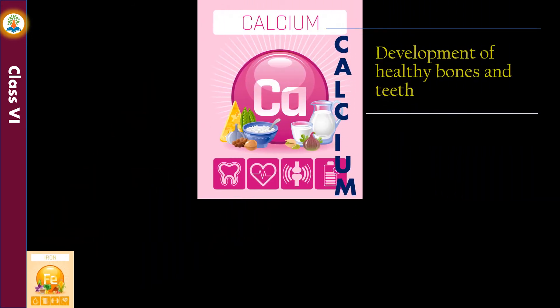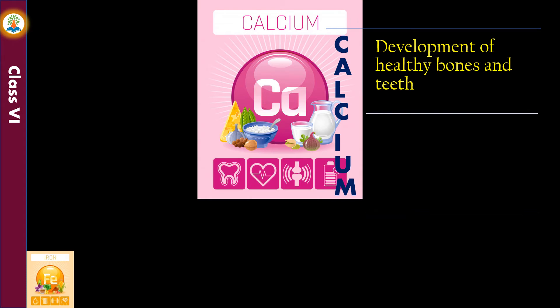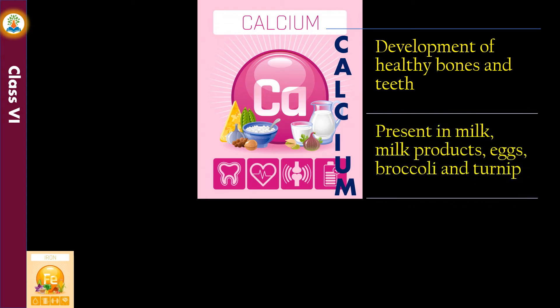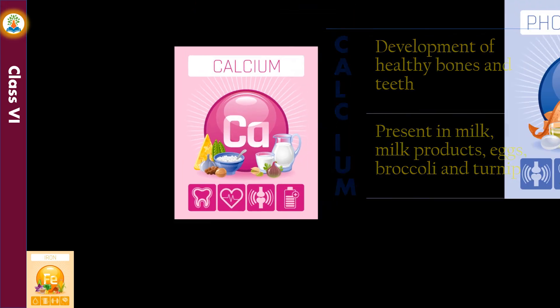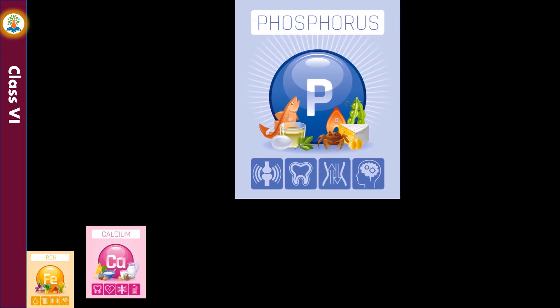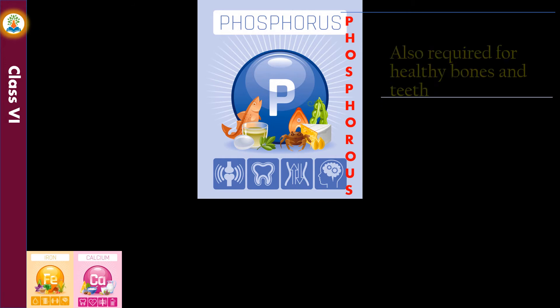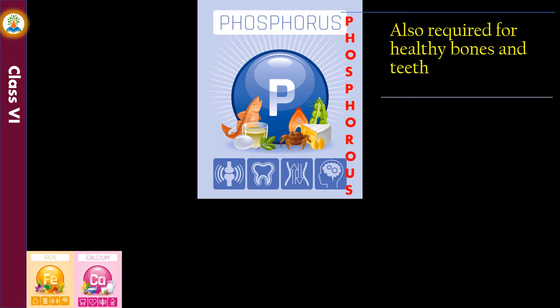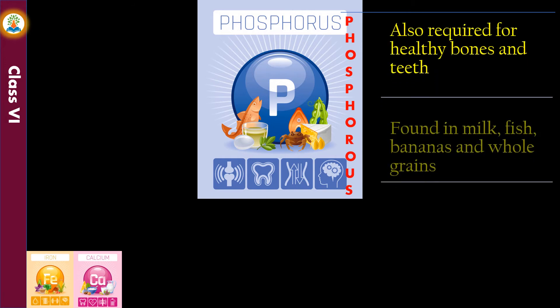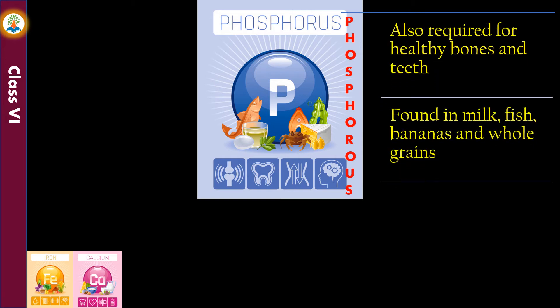Calcium is essential for the development of healthy bones and teeth; it is present in milk, milk products, eggs, broccoli, and turnip. Phosphorus is also required for healthy bones and teeth; it is found in milk, fish, bananas, and whole grains.